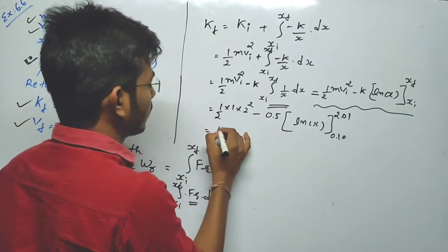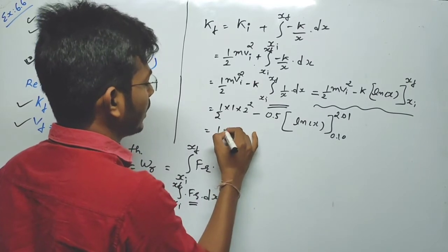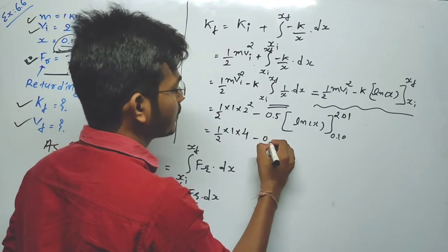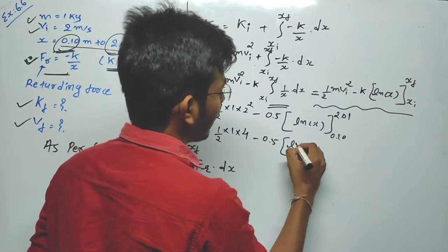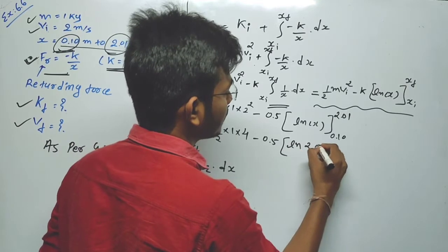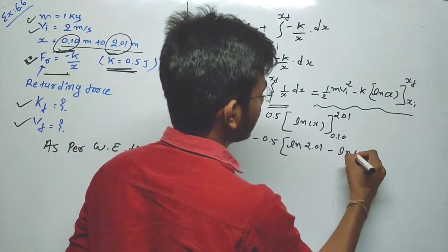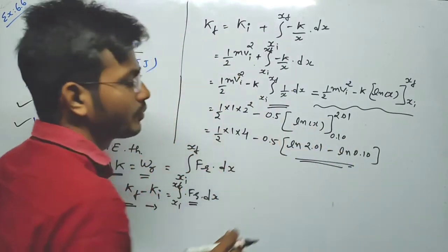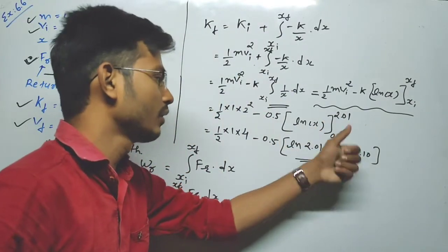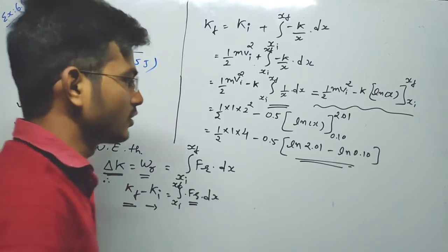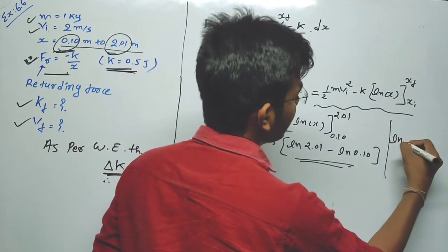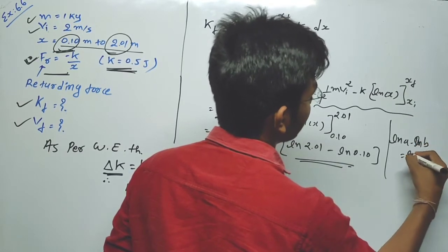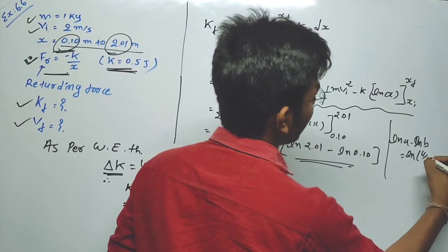So we have 2 - 0.5 × [ln(2.01) - ln(0.10)]. Applying the logarithm rule: ln(a) - ln(b) = ln(a/b). So ln(2.01) - ln(0.10) = ln(2.01/0.10).